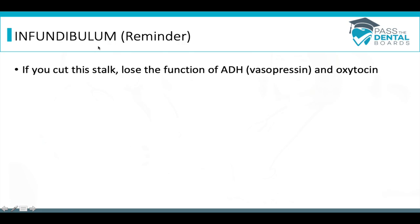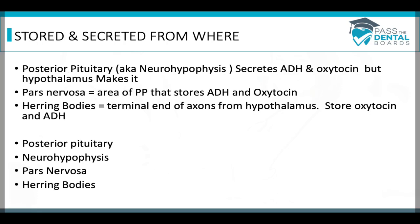The infundibulum is the highway that passes hormones from the hypothalamus to the posterior pituitary gland. They love to ask what will happen if you cut the infundibulum — cutting that stalk means you'll lose function of both ADH and oxytocin. You have to be careful about wording here: the hormones are produced in the hypothalamus, but they're stored and secreted from the posterior pituitary gland.